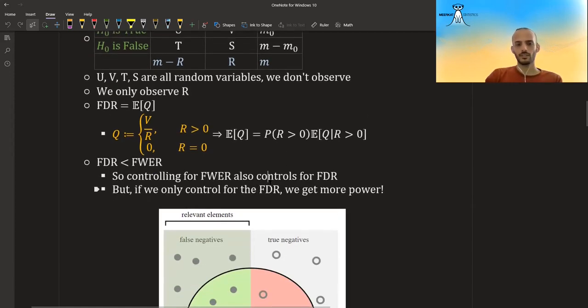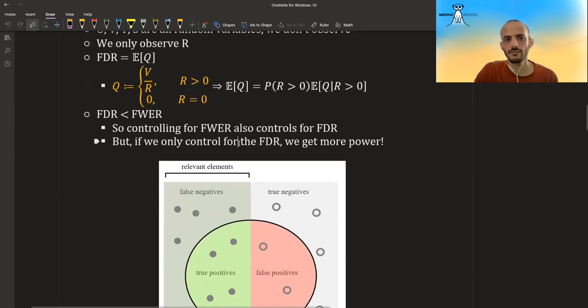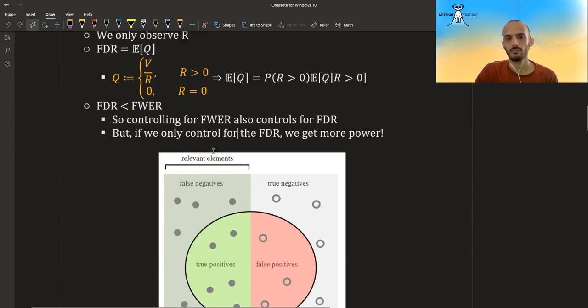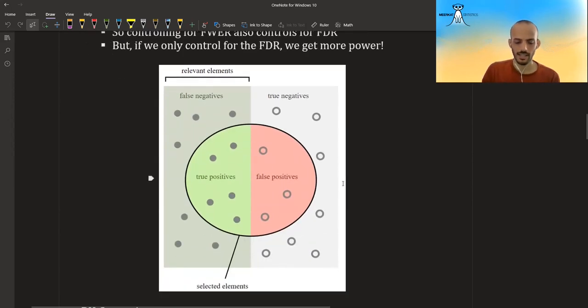One thing that we should note is that FDR is actually smaller than FWER. So whenever we control for the FWER, we also control for the FDR. So they also show this in the original paper, but it's fairly easy and it's not so important. The main benefit of using FDR is that if we use the FDR, we get more power. So how I like to think about it, and I could be completely wrong, please take everything with a grain of salt. I'm just a master student.